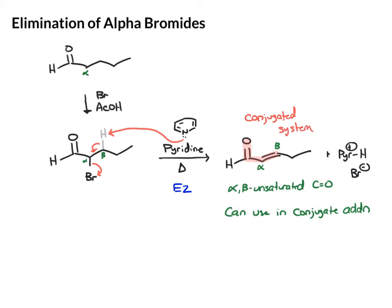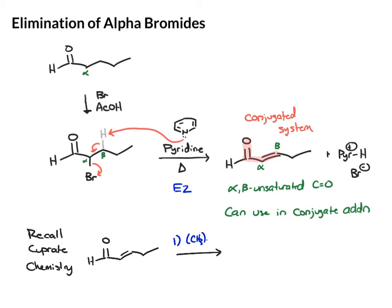To review one reaction you can do with these alpha-beta unsaturated carbonyls, remember cuprate chemistry. If we take the compound we made and say we want a methyl group at the beta position, we can use methyl cuprate, (CH3)2CuLi, followed by a water workup, and that will put a methyl group at the beta position.